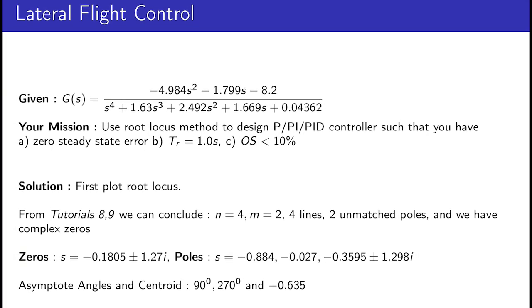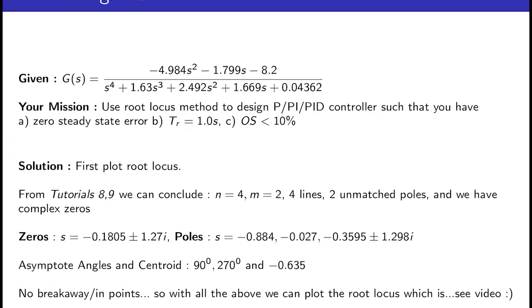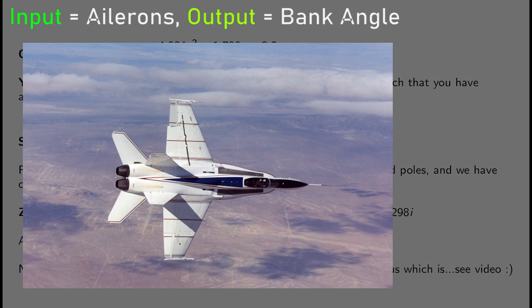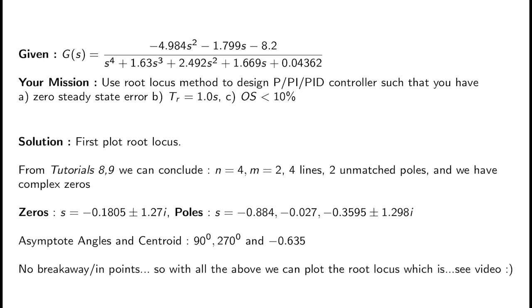Now here is our example of lateral flight control. You have a very large transfer function — something multiplied by s squared divided by something multiplied by s to the power of four. The output is the bank angle of an airplane (like a small jumbo jet) and the input is the aileron angle. The transfer function is output divided by input. Your job is to use the root locus method to design a controller achieving: zero steady state error, a rise time of 1.0 second, and an overshoot of less than 10%.